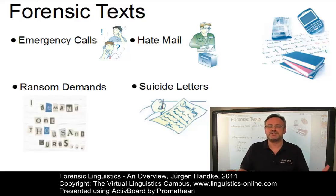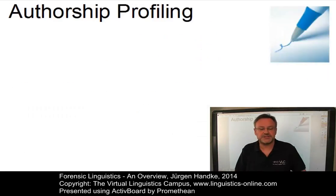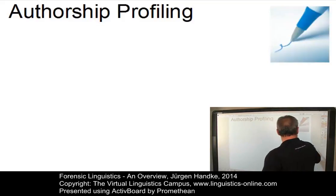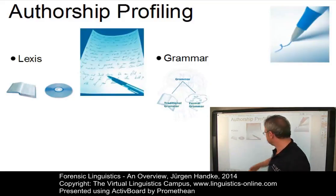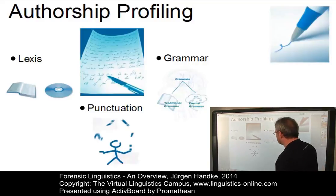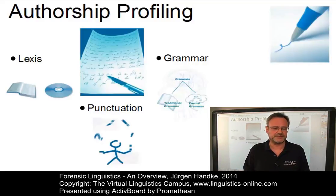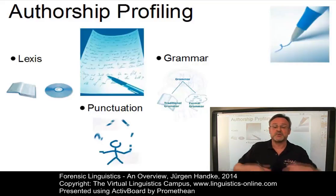In all these texts, there are linguistic features that can provide evidence concerning the authorship of a particular written document. There are two central linguistic parameters applied here. The first involves the lexis, that is the vocabulary of a forensic text, and the second is the grammar. And then we have the orthography, in particular the punctuation, which often provides important clues as far as the authorship of a text is concerned. This kind of linguistic profiling has been most effectively used to narrow down a suspect list rather than to positively identify a suspect.